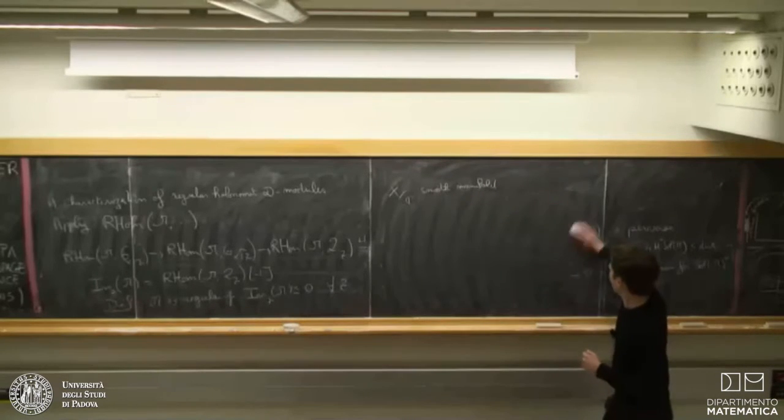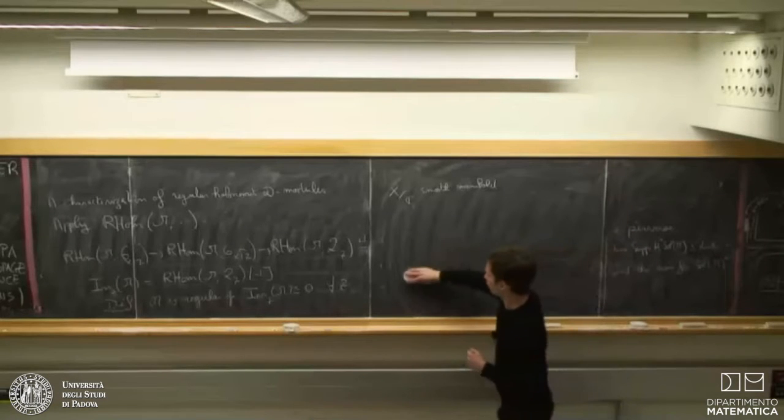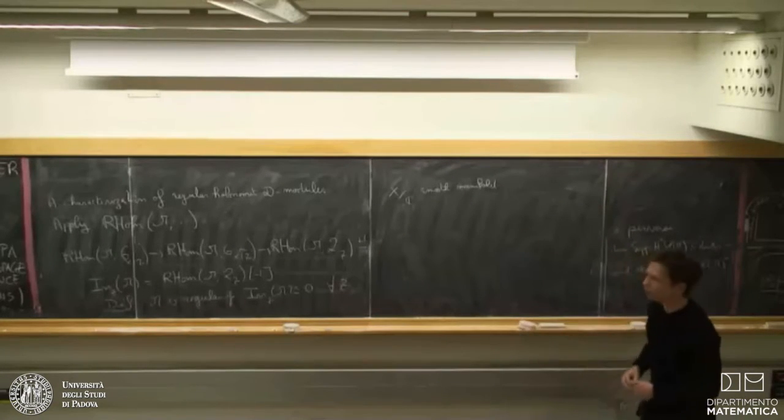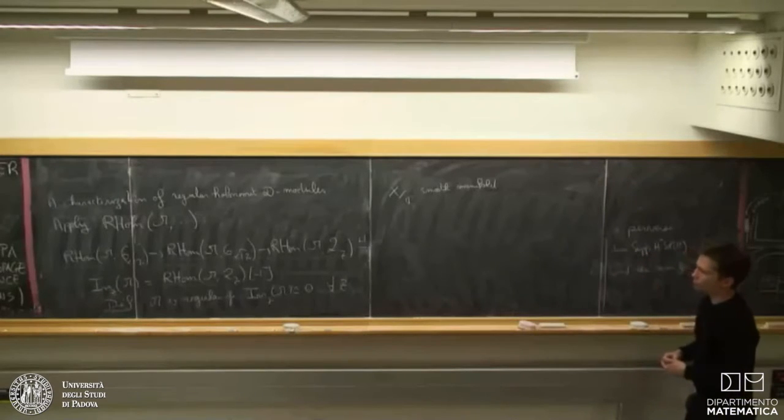And following what we saw in dimension one, it is quite natural to denote the irregularity sheaf of M along Z by this guy. So, actually, this would be the shifted one, shifted by one. And as in dimension one, we'll say that M is regular if its irregularity sheaf along any Z is zero.